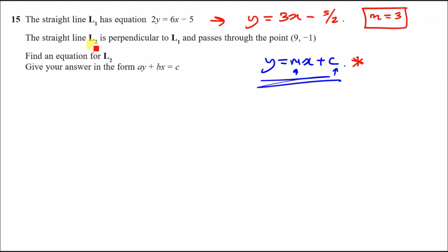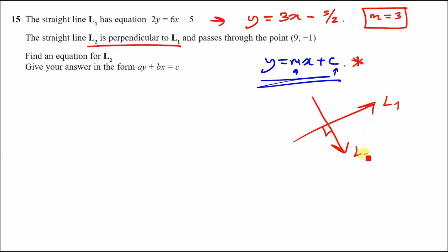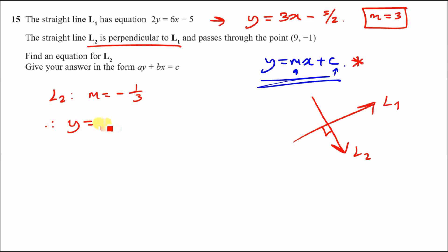The straight line l2 is perpendicular to l1. Perpendicular means that if one line faces this direction, the other is at a 90-degree angle. This has an impact on the gradient. If the gradient of l1 is 3/2, then the l2 gradient is going to be the negative reciprocal — it's going to be −2/3. You flip it upside down and change the positive sign to negative. So immediately we know the equation of l2 is y = −(1/3)x + c, where c is unknown.